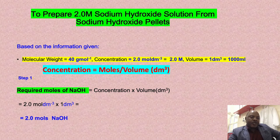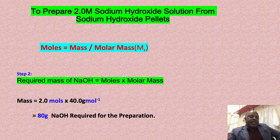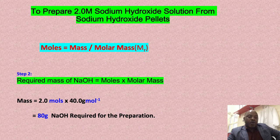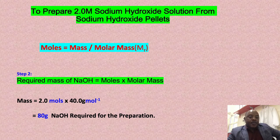Step number two: we convert the number of moles calculated into the mass of sodium hydroxide pellets. Using the relation moles equals mass divided by molecular weight, and given the molecular weight is 40 grams per mole, the mass equals 2 moles × 40 g/mol. The mole units cancel out, giving us 80 grams of sodium hydroxide pellets required for the preparation.